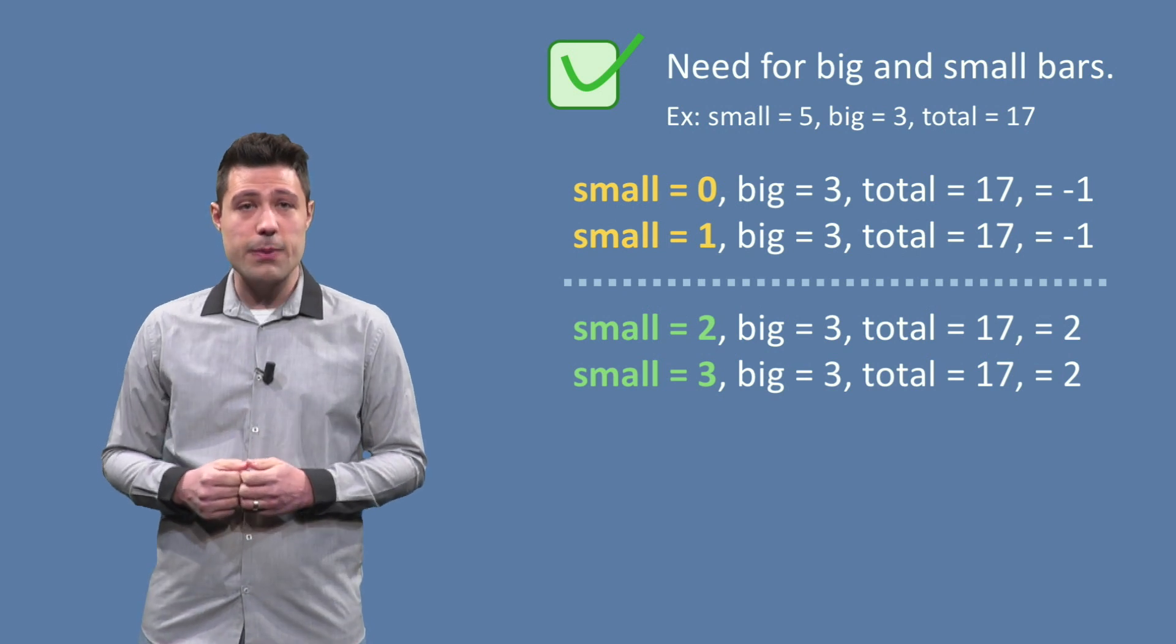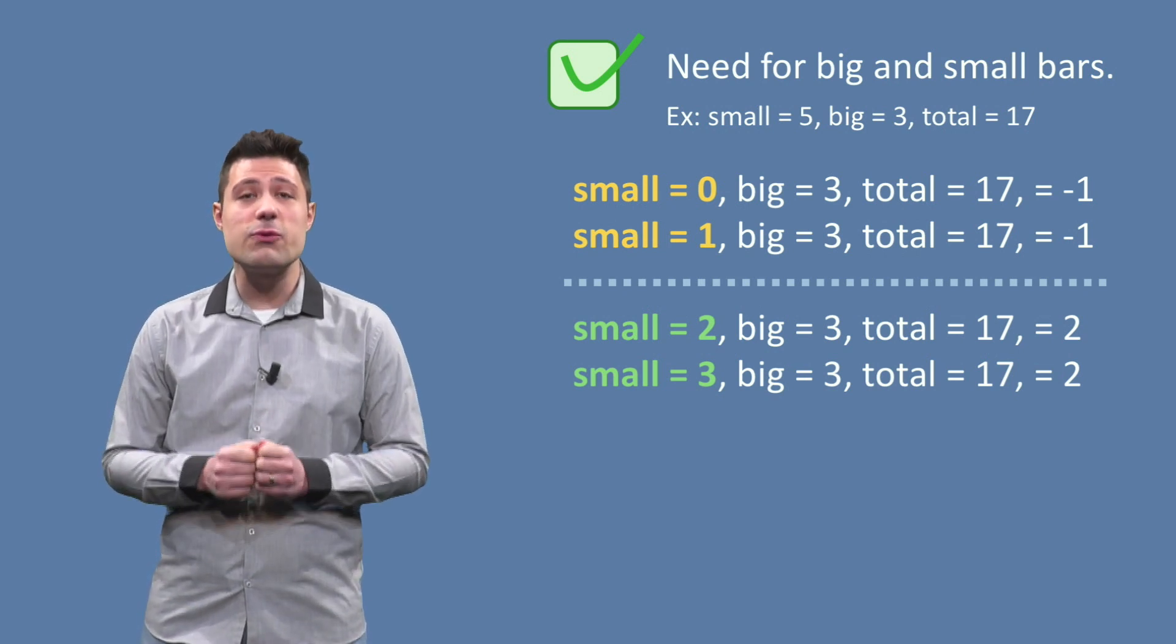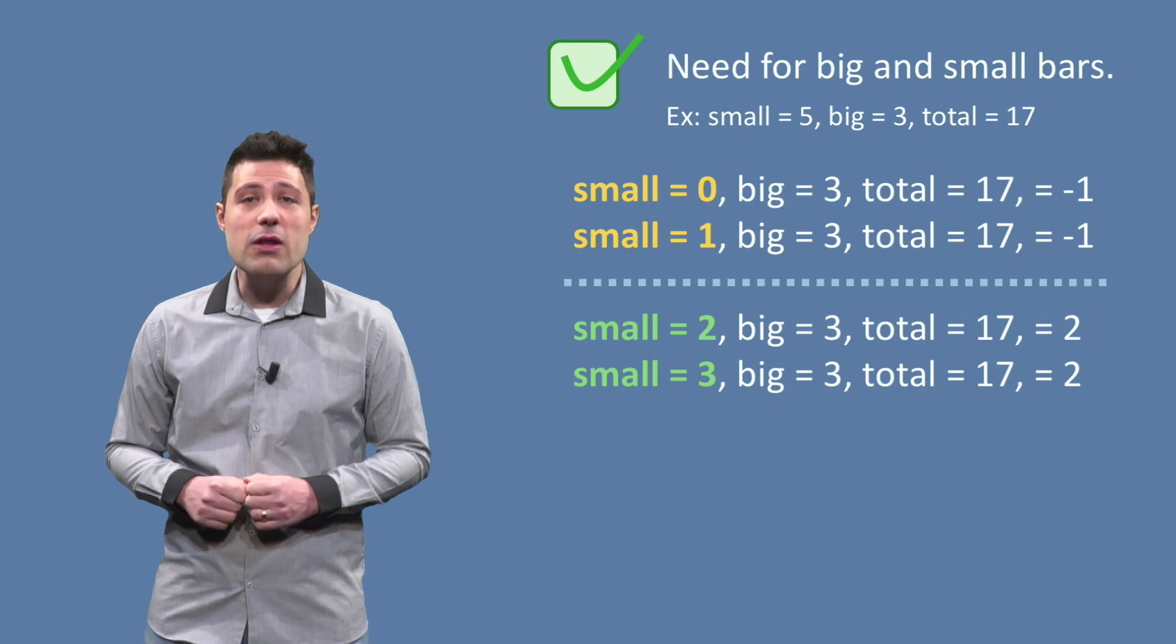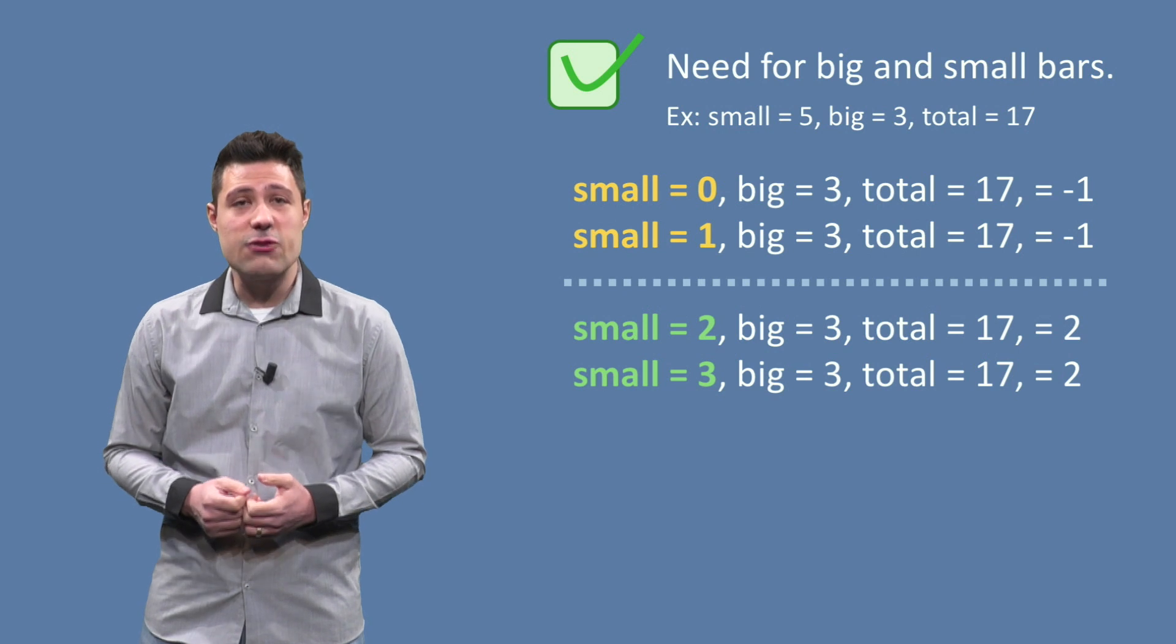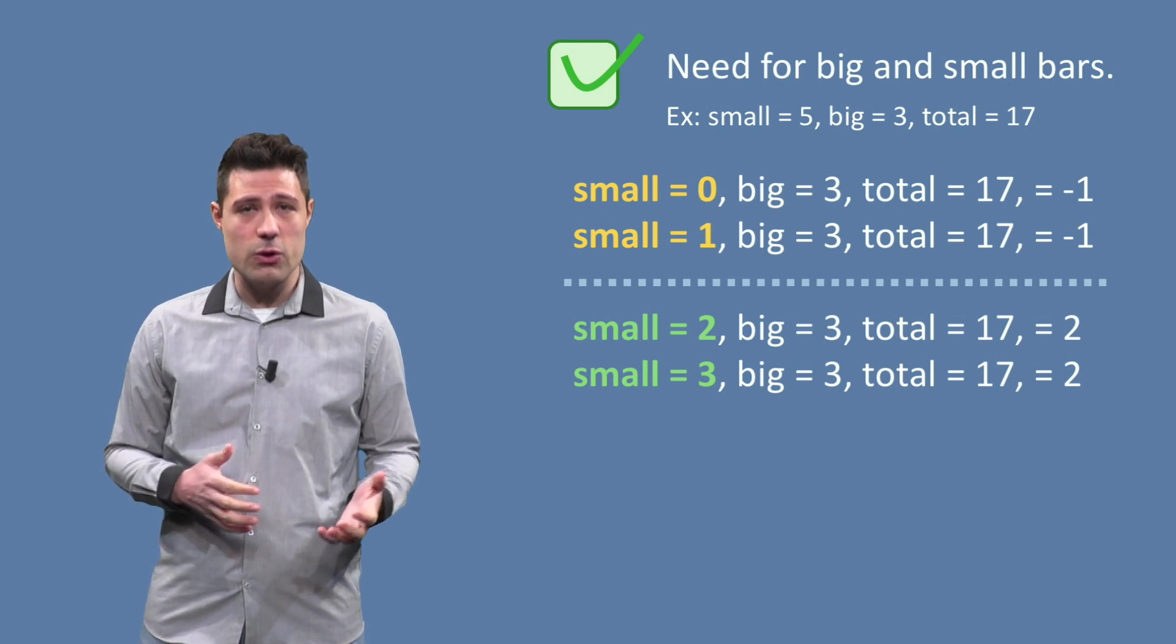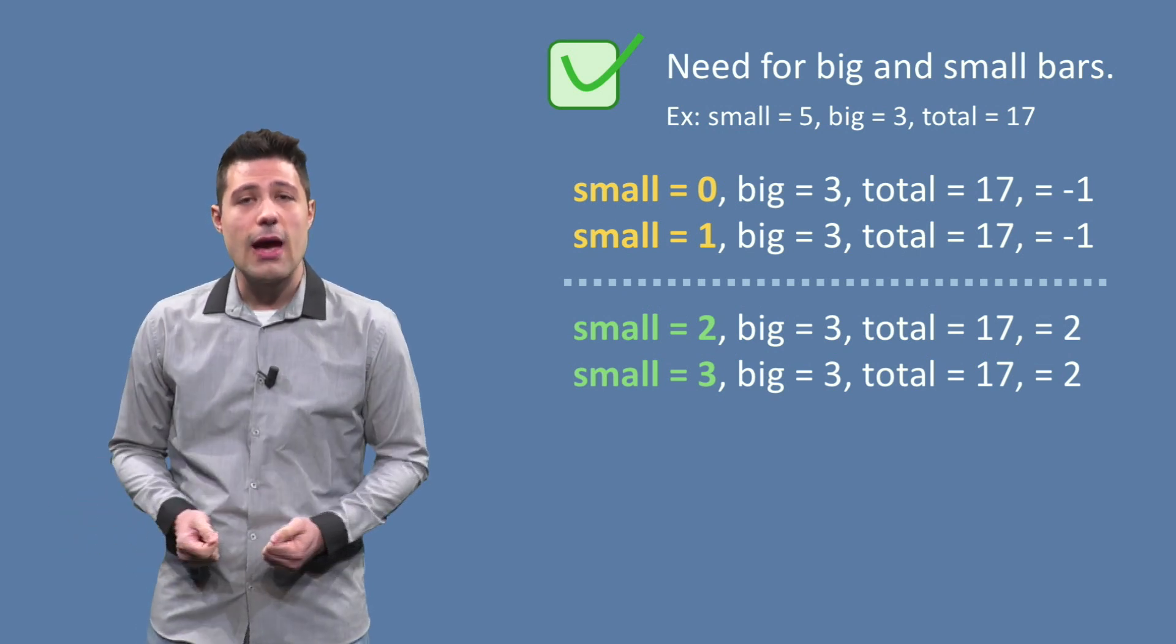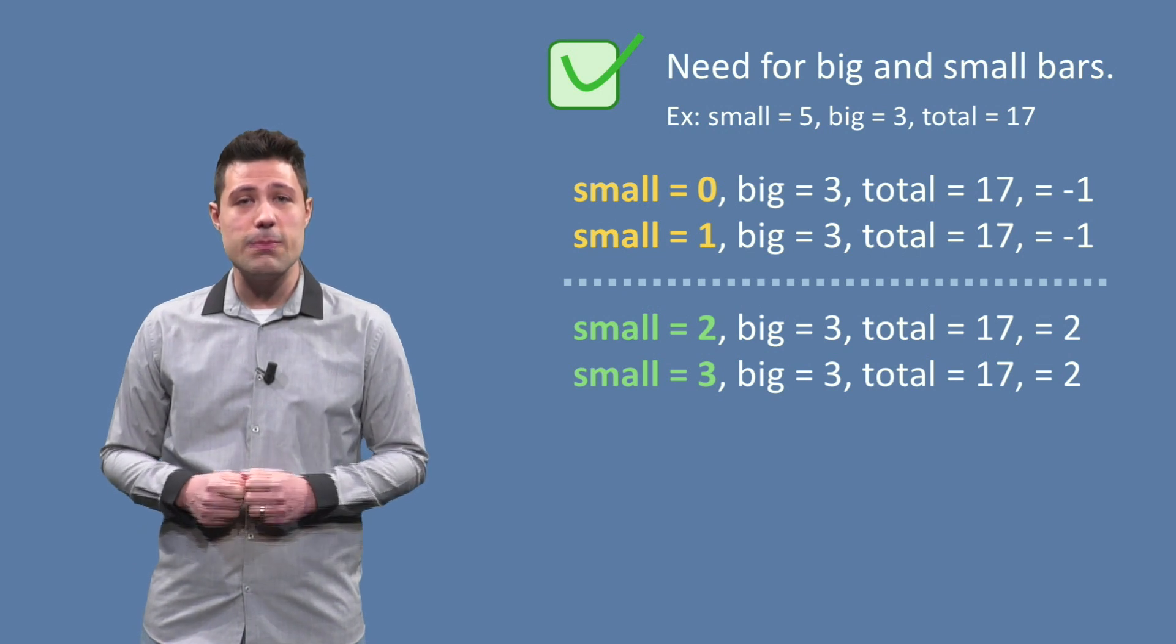But we can think of another boundary in this partition. Right now, if we take big equals 3 and total equals 17 as a starting point, the 3 big bars will be used and then we go for the small bars. However, there is another way of using big and small bars.